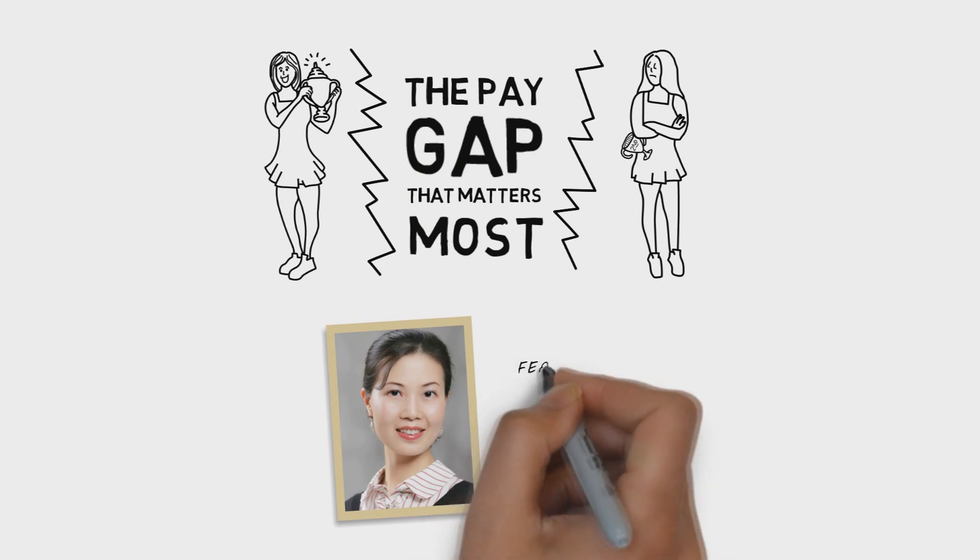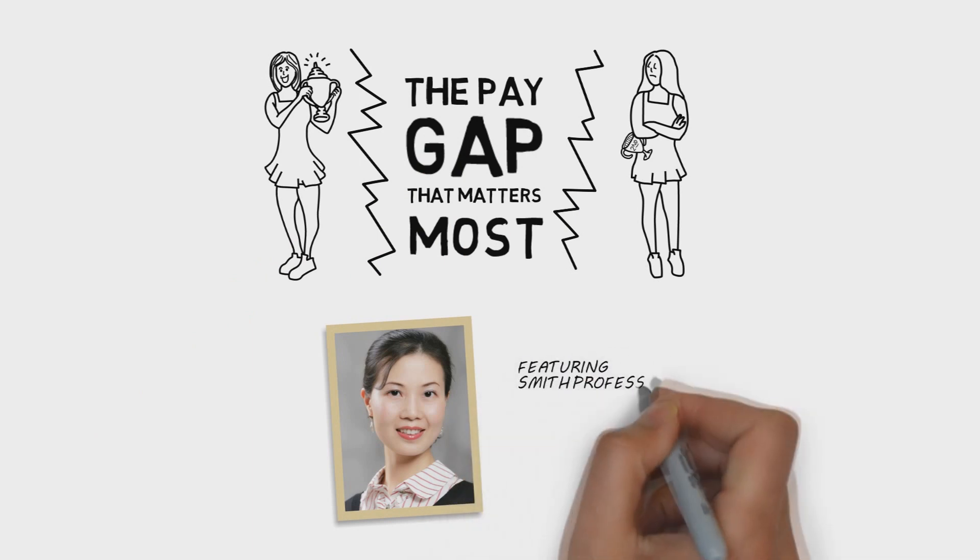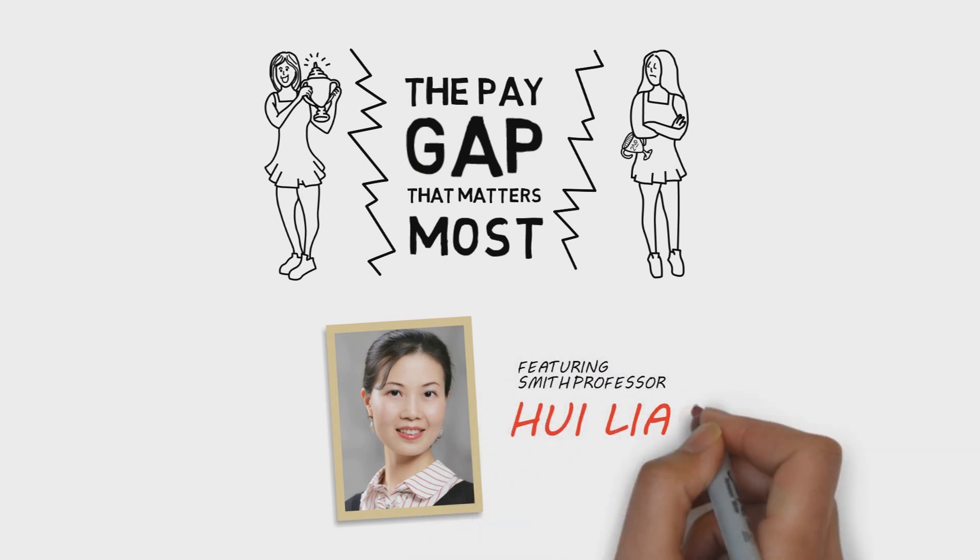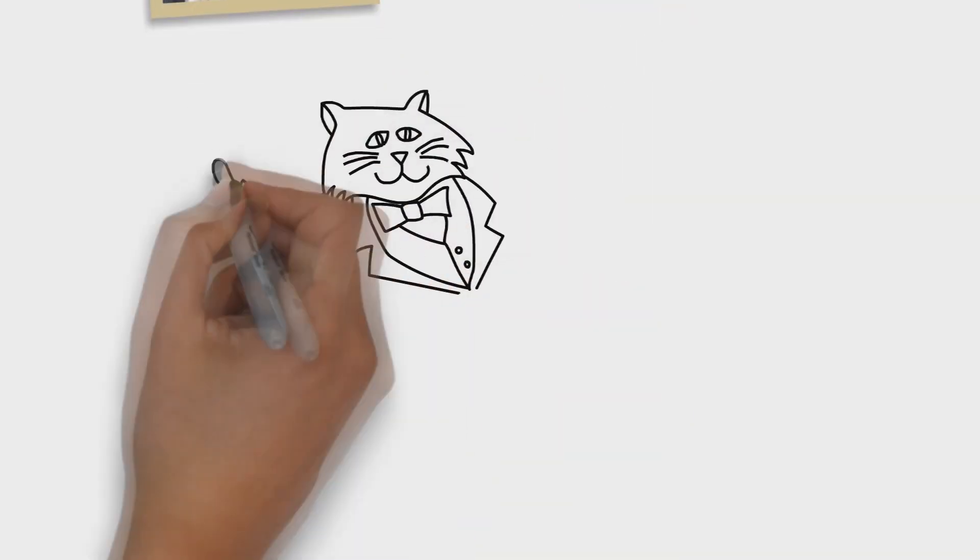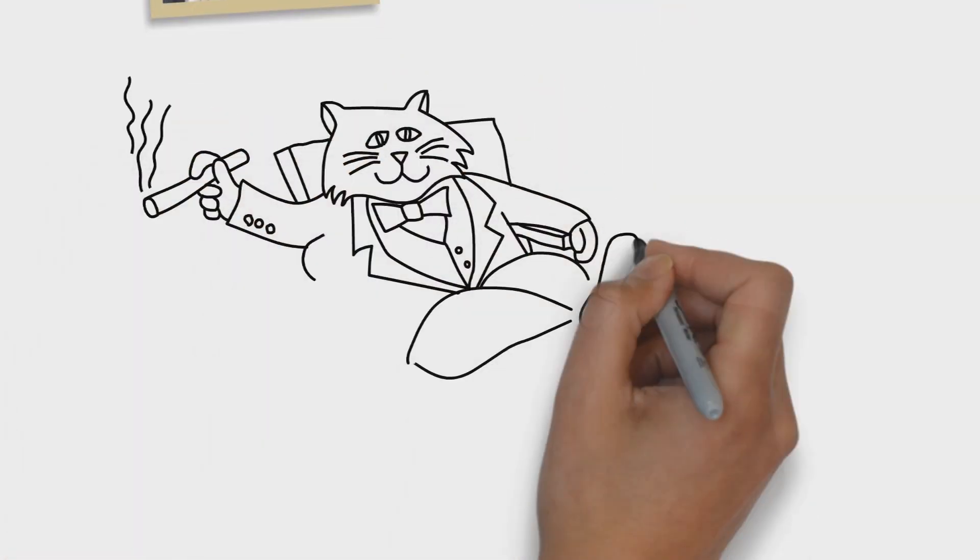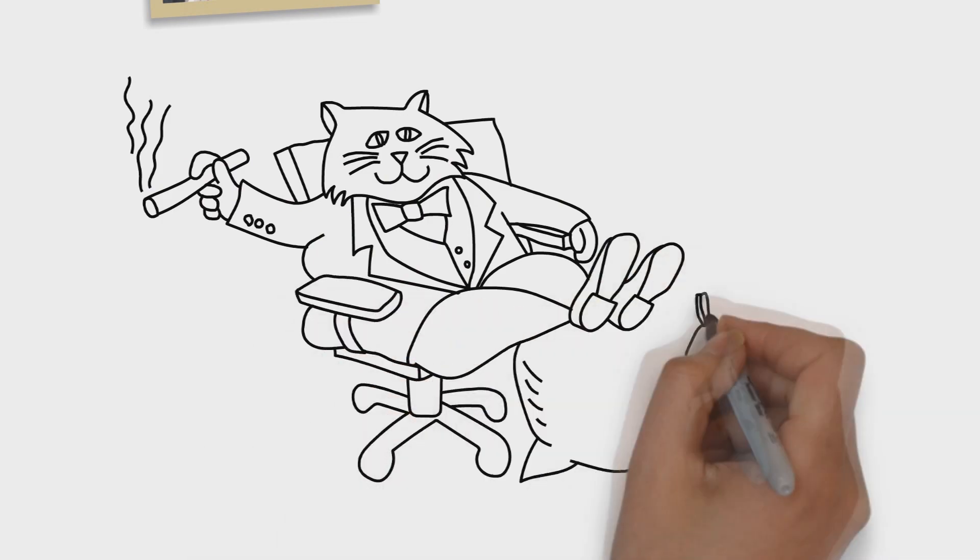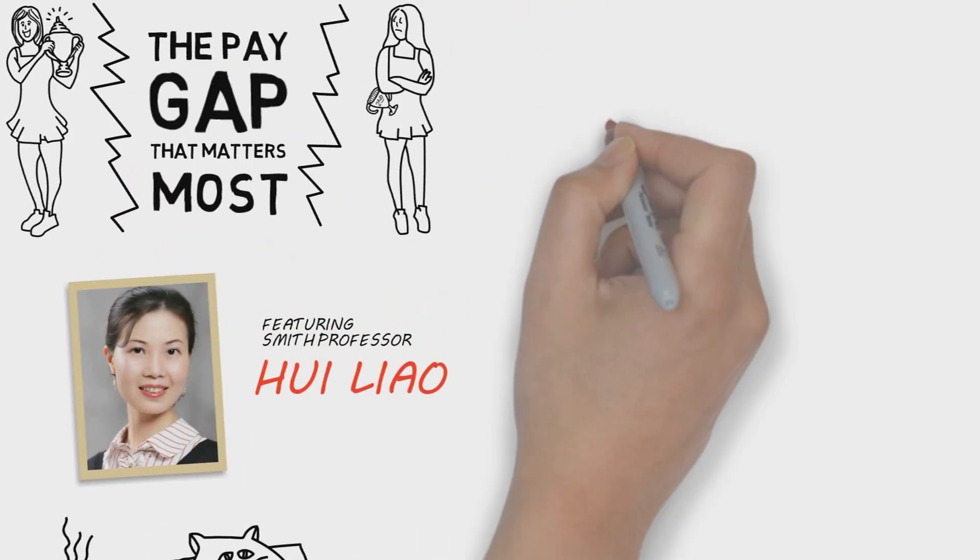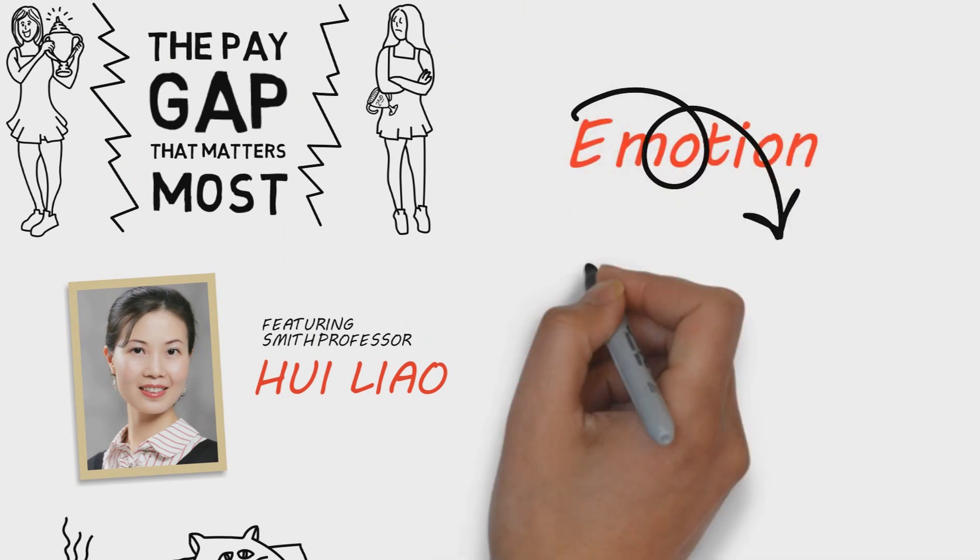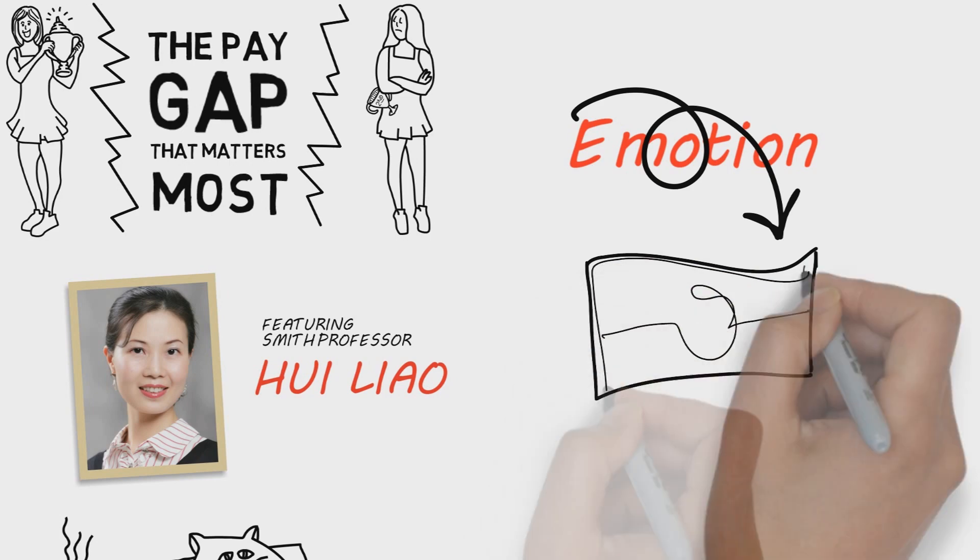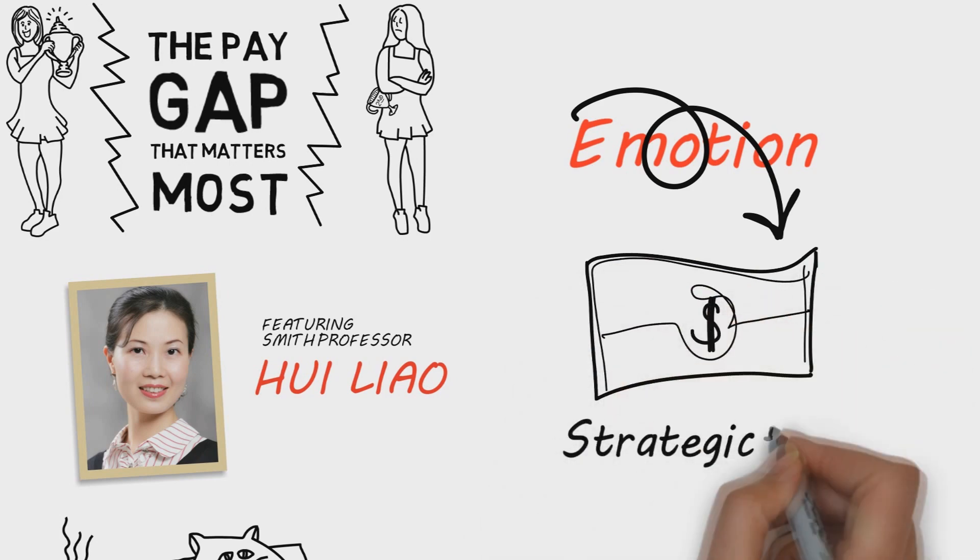Emotions run high when people talk about executive salaries. American CEOs earn over 300 times more than the average employee, which can anger frontline workers making minimum wage. The frustration is understandable, but my colleagues and I moved beyond the emotion and studied compensation design as a strategic tool to motivate performance.